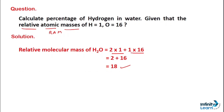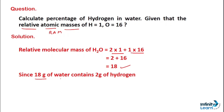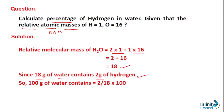This tells us that in 18 grams of water, there are 2 grams of hydrogen. Now we need to show this as a percentage. To show any value as a percentage, the best method is to find its value per 100. So we will find how many grams of hydrogen are in 100 grams of water. The formula applied here is: 2/18 × 100, giving us 11.11 grams of hydrogen.